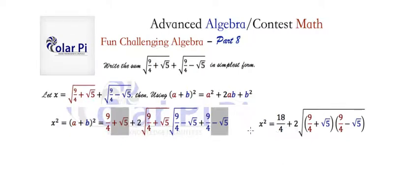Doing all that, we can write x squared like this on the right side. That is, the 9 over 4 is combined to 18 over 4, the plus root 5 minus root 5 took care of each other, and then the 2ab we can write as a single square root. Inside the square root in the quantity 2ab, we have a difference of squares situation: u plus v times u minus v, which is u squared minus v squared. Inside the square root here we can write 9 over 4 squared minus root 5 squared, that is 81 over 16 minus 5 inside the square root.